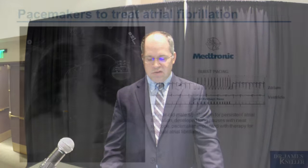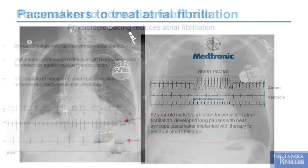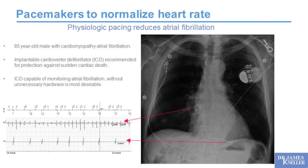Here we see atrial fibrillation recorded in the top chamber. The pacemaker delivers a bursting train of impulses in an attempt to stop the rhythm. In this case it was unsuccessful and atrial fibrillation continued, but the device continues looking for opportunity to do that again and can, in fact, be quite successful.